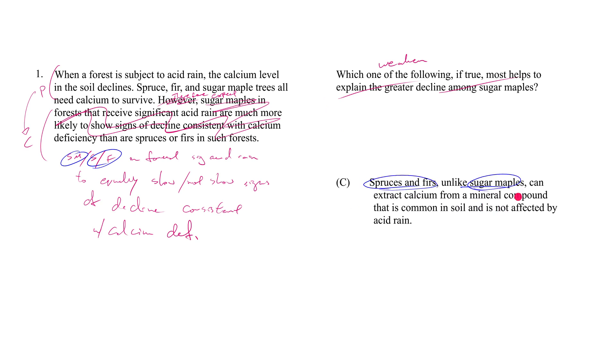So now I no longer have reason to believe that they're equally going to show or not show signs of decline. I think now, given that C is true, I'm probably going to bet on sugar maples showing signs of decline more so than spruces and firs. So C works really well in weakening this argument.